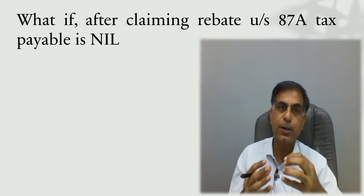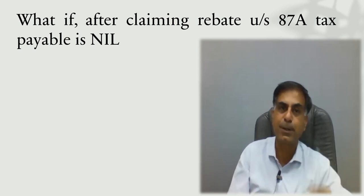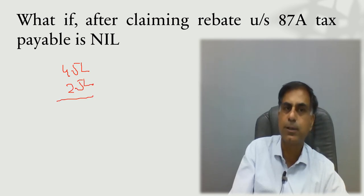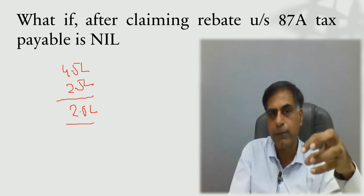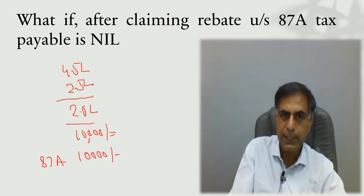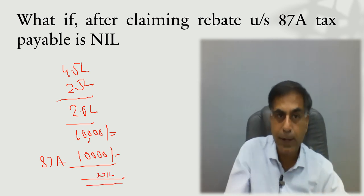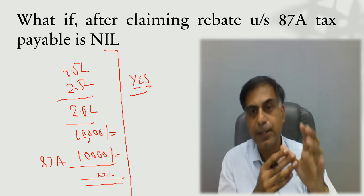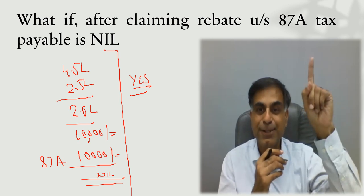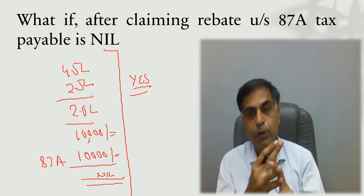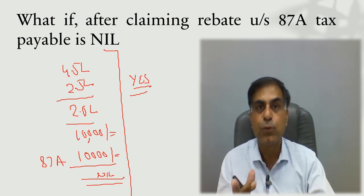One more important question: what if after claiming rebate under Section 87A, tax payable is nil? Say a person has Rs. 4.5 lakh total income. Above the Rs. 2.5 lakh basic exemption, there is Rs. 2 lakh incremental income, and at 5% that gives a tax of Rs. 10,000. He may claim rebate under Section 87A up to Rs. 12,500, making his tax liability nil. But the answer is: yes, ITR filing is still mandatory. Section 87A rebate is not a criterion for not filing your return.